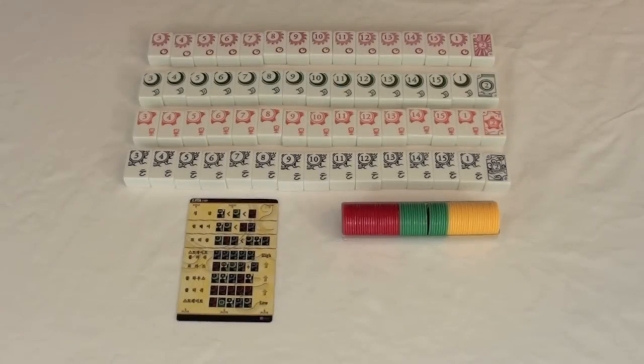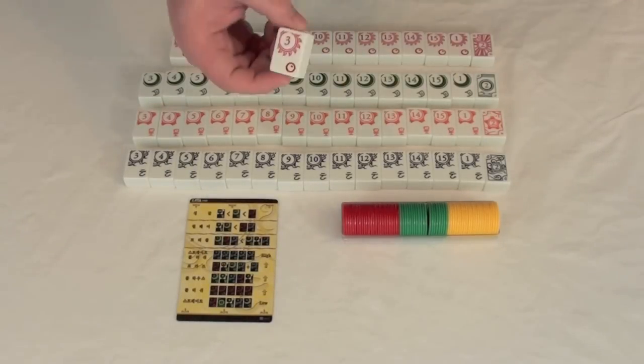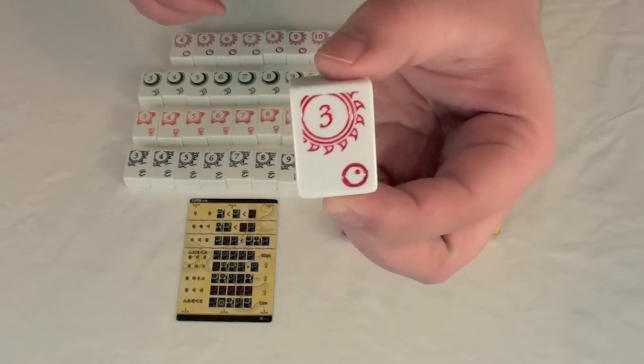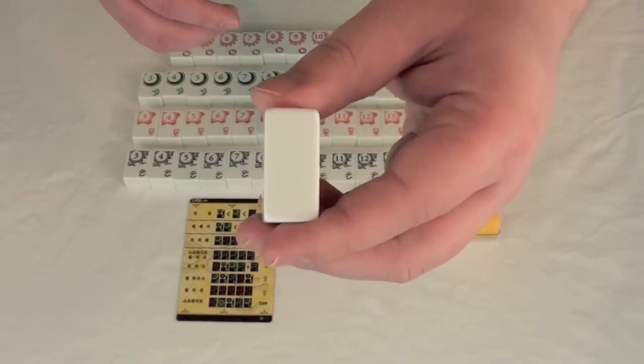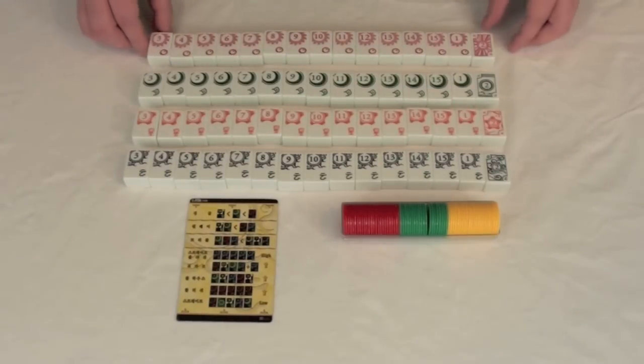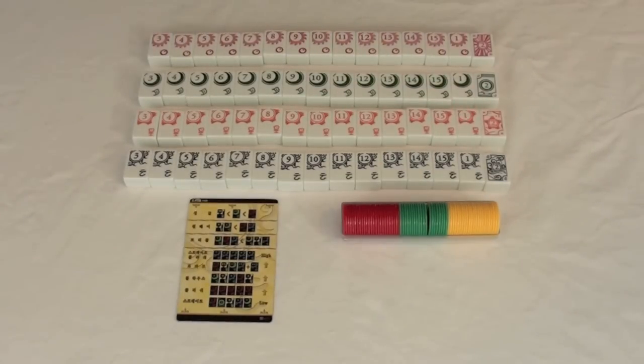Here you can see all of the components for Lexio. You have these tiles. Don't be confused, this is essentially a card game, but you're going to play with these really nice tiles. These are made out of some type of Bakelite material, and you can see they're very thick, about the thickness of my finger, and they're very solid. They're going to be very nice and very well-lasting components.